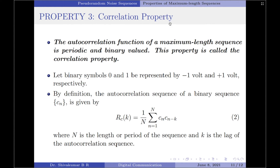Moving on to the third property, we have the correlation property. The property says the autocorrelation function of a maximum length sequence is periodic and binary valued. For understanding this property, let the binary symbols 0 and 1 be represented by minus 1 volt and plus 1 volt respectively. The autocorrelation sequence of a binary sequence c_n — representing the maximum length sequence — is given by R_c(k) = (1/N) × summation from n=1 to N of c_n multiplied by c_(n−k).